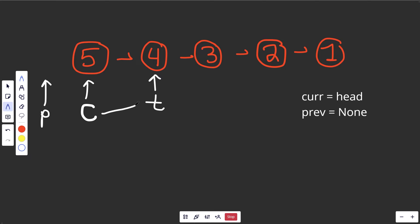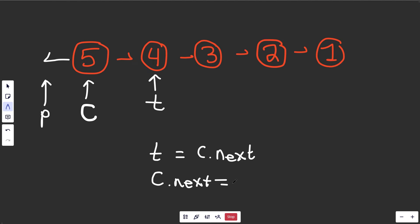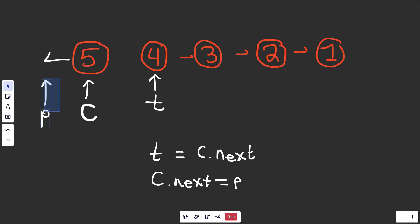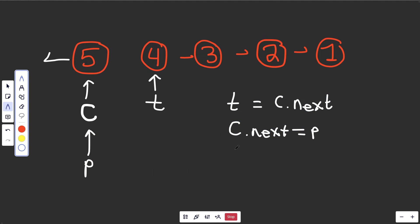We're writing the code that'll run in a loop - we'll worry about loop conditions later. First, t equals curr.next so we don't lose the list. Then we set curr.next equal to prev, which flips the connection. Drawing this out: c.next equals prev draws the left-pointing connection and removes the original forward connection. Then we want to keep prev one step behind curr and move curr over, so we set prev equal to curr.